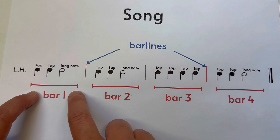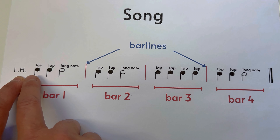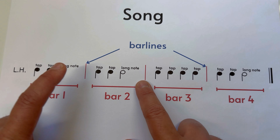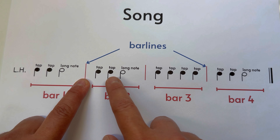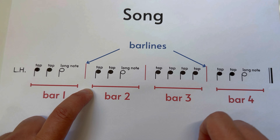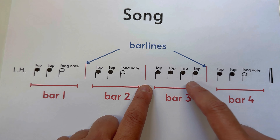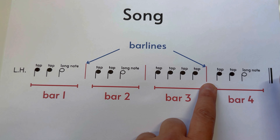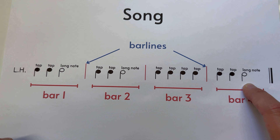Let's have a look at this more carefully. In house number one, or bar number one, we have two children and one grown-up in the house at the moment. In the next house — between these two fences, between these two bar lines — we also have two children and a grown-up. This is bar two. In the next house, between these two fences, we have four children and no grown-ups — and this is bar number three. And in the next house, between these two fences, bar number four also has two children and one grown-up.